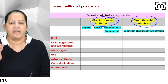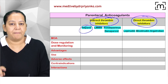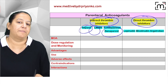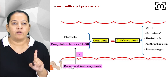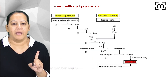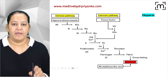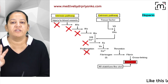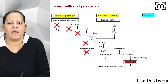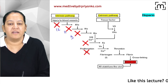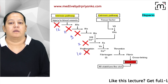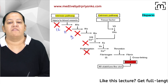Moving on to parenteral anticoagulants, we have indirect and direct categories. Under indirect, we have three agents: heparin, low molecular weight heparin, and danaparoid. Let's go through them one by one.